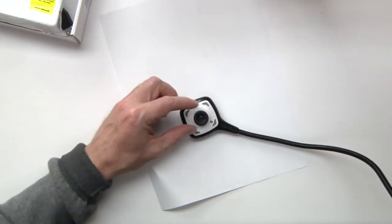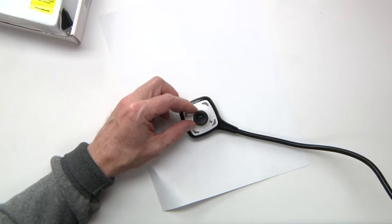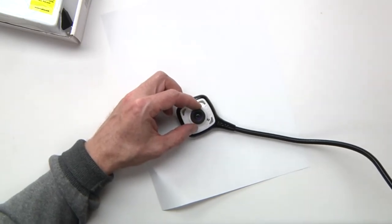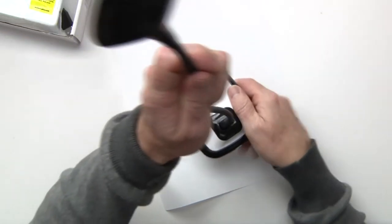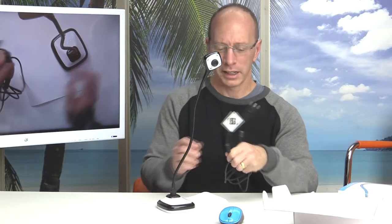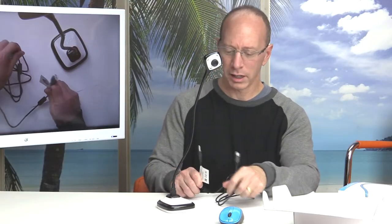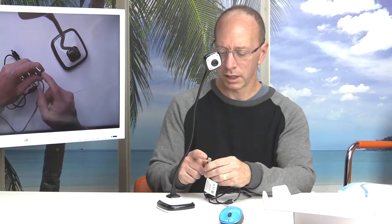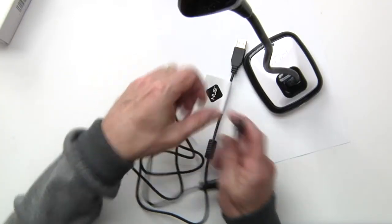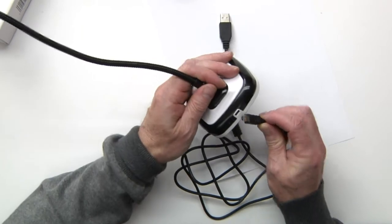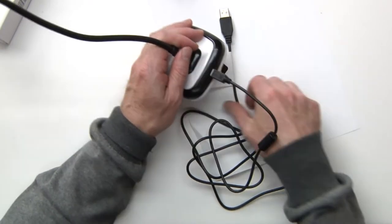This camera right here has an adjustable focus. So right here, you can adjust the focal length of your camera. Also in the box, it comes with a pretty long cord. Here's a USB right here. And this cord will attach right here. So that way, when you insert this into your laptop or your computer, you will have a pretty long cord to work with. Look at that.